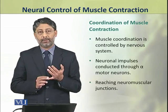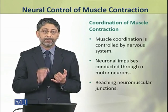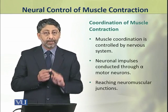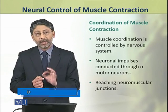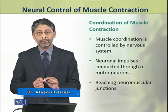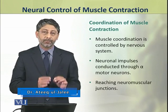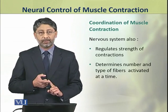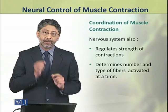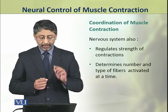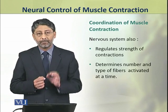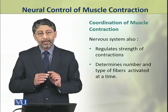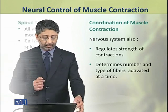Dear students, muscle coordination is controlled by the nervous system, which sends neuronal impulses conducted through the alpha motor neurons to the neuromuscular junctions. The nervous system also regulates the strength of contraction of muscles and determines the number and type of muscle fibers activated at a time.